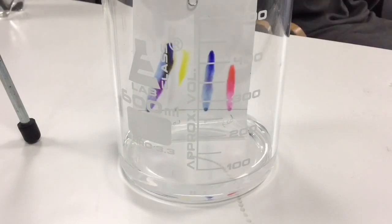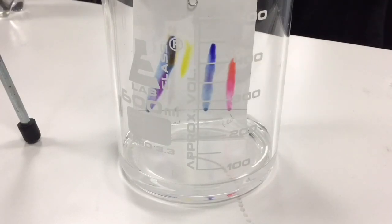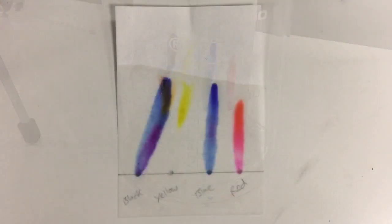This time-lapse video shows how the inks are separated over a period of 10 minutes. Once the inks have moved roughly two-thirds of the way up the paper you should remove the paper and allow it to dry.